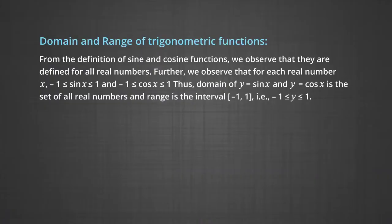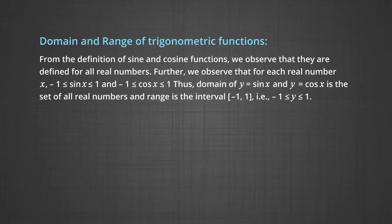From the definition of sin and cosine functions, we observe that they are defined for all real numbers. Further, for each real number x, minus 1 is less than or equal to sin x is less than or equal to 1, and minus 1 is less than or equal to cos x is less than or equal to 1. Thus, the domain of y = sin x and y = cos x is the set of all real numbers, and the range is the interval [-1, 1].